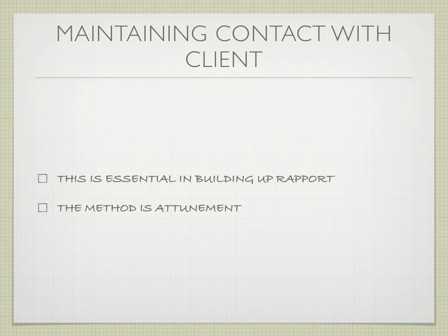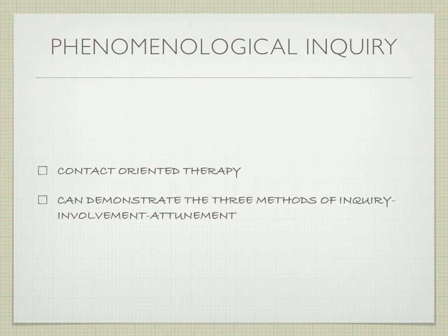What usually happens is that the client attempts to break contact in some way — there are interruptions to contact. The evaluator will be looking at how the therapist is making contact with the client. Phenomenological inquiry is also relevant here; remember we have a contact-oriented therapy, and it's important that the person can demonstrate the three methods of integrative psychotherapy: inquiry, involvement, and attunement.